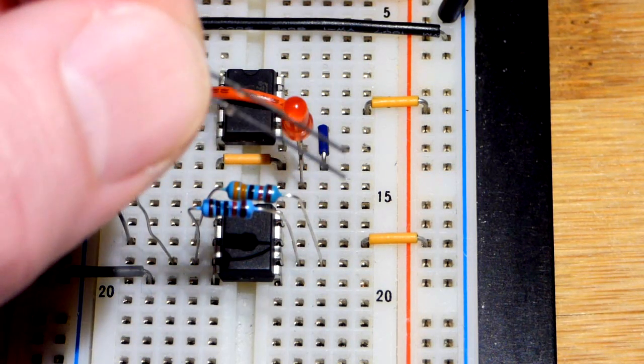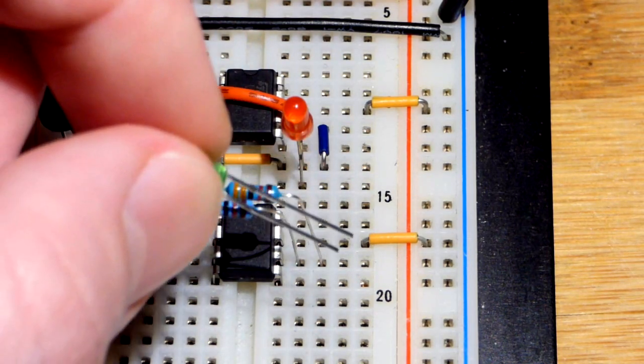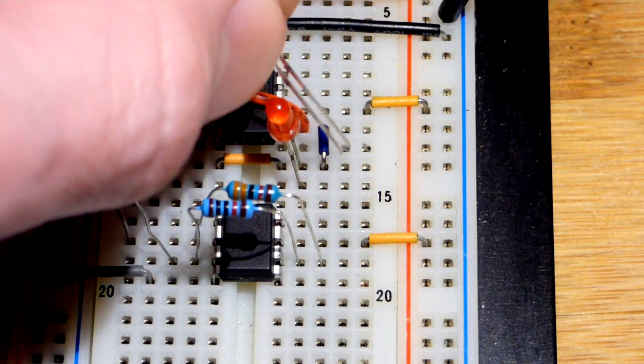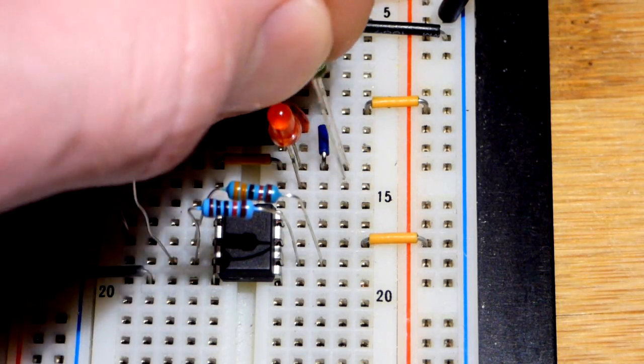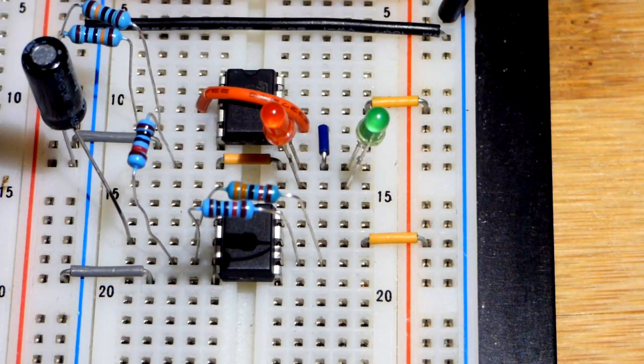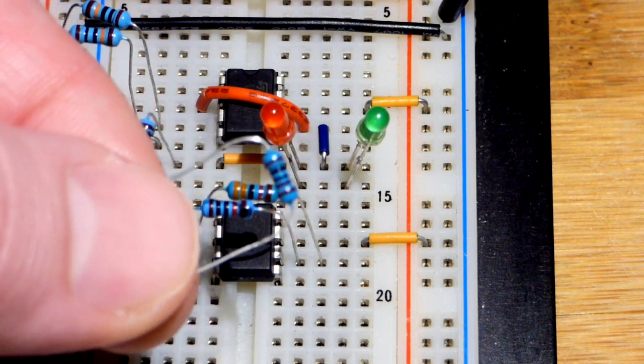The green one we're going to wire in the opposite direction. We want the short lead now because we want this to light up when the output is more negative than our zero volt reference point. So the long lead, the anode, is going to go to our zero volt reference point. The cathode is going to go down one row.